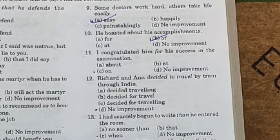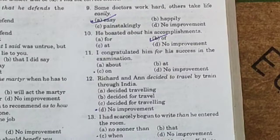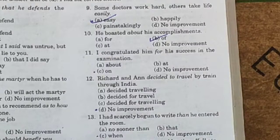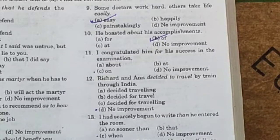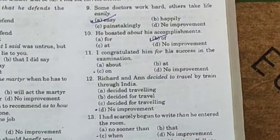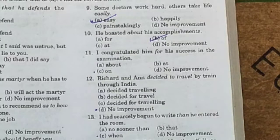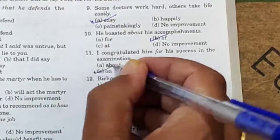Eleventh one: 'I congratulated him for his success in the examination.' Option A: about. Option B: at. Option C: on. Option D: no improvement. Correct form is: 'I congratulated him on his success in the examination.' After 'congratulated', 'on' is used, not 'for'. The options 'about', 'at', and 'no improvement' are incorrect. The eleventh answer is option C: on.